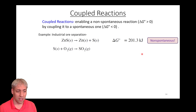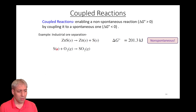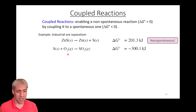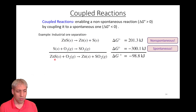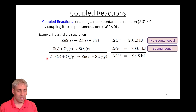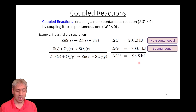This reaction just does not occur on its own. So on an industrial scale, they use coupled reactions: take the zinc sulfide going to zinc solid plus sulfur solid, and couple it to sulfur solid combining with oxygen to give SO2 gas. This second process is very spontaneous — delta G is negative 300 kJ/mol. Adding these two reactions together gives an overall delta G of negative 98.8 kJ/mol, making the overall process spontaneous.